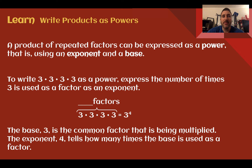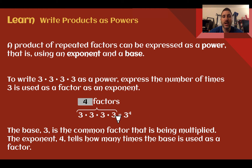Write products as powers. A product of repeated factors can be expressed as a power — that is, using an exponent and a base. So if we had 3 times 3 times 3 times 3, we could write that as a power by expressing the number of times 3 was used as a factor as the exponent. We can see 3 was used 4 times, so we would use 3 as the base and 4 as the exponent. So 3 times 3 times 3 times 3 would be 3 to the 4th power.